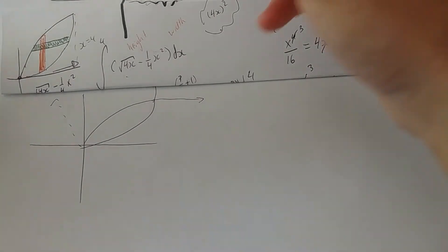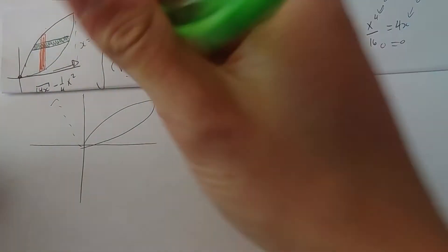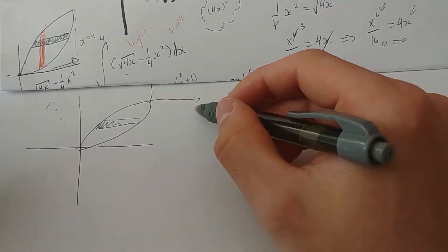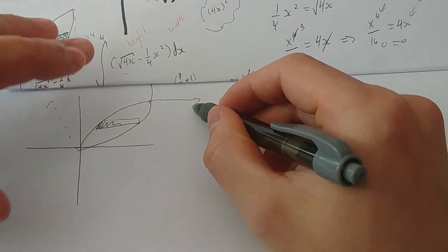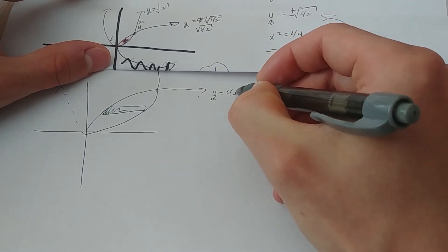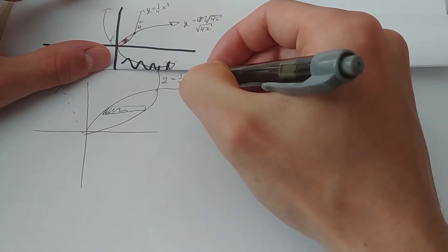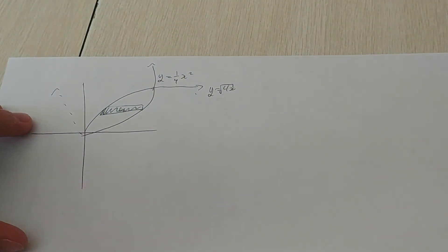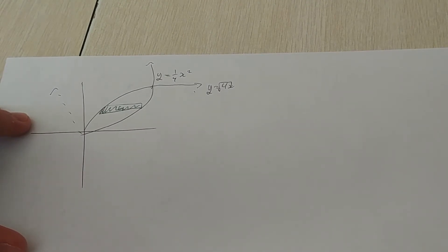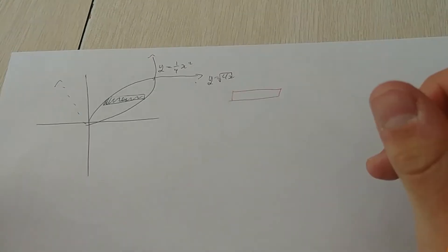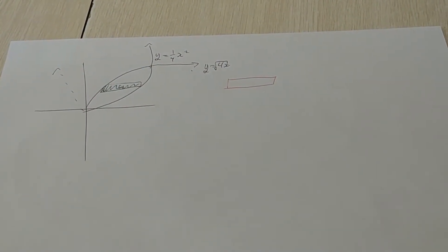The other way to do it is the horizontal way. The top function was y equals root 4x and the other was y equals a quarter x squared. For horizontal rectangles, the width is dy. The length of each rectangle at any given point is the right side minus the left side.